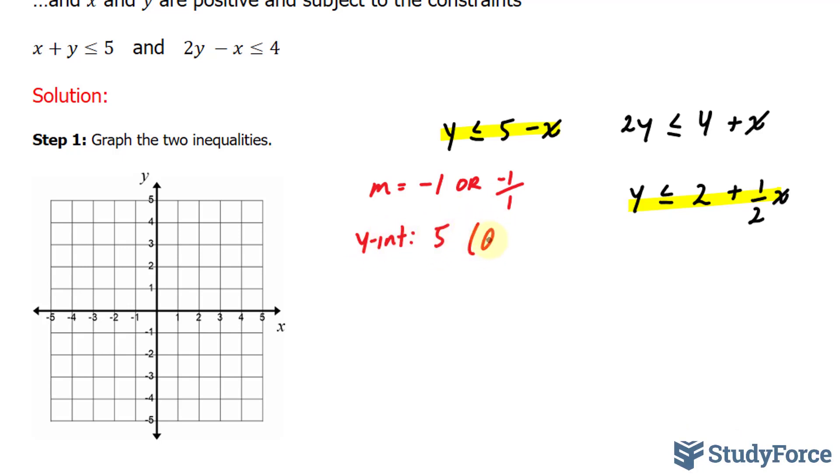In other words, 0 and 5. Those are the coordinates for my y-intercept. For this equation, my slope is 1 over 2. That's my rise and that's my run. My y-intercept is 2, or the point 0 and 2.